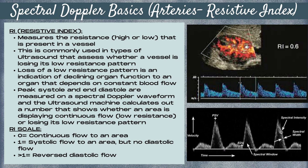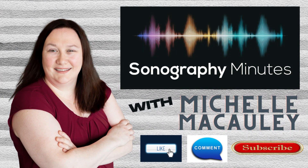On the RI scale, 0 indicates continuous flow to an area, which is a low resistance waveform. 1 indicates systolic flow but no diastolic flow, which is a high resistance flow pattern. Greater than 1 indicates a reverse diastolic flow. Interested in learning more about ultrasounds? Tune in on Wednesdays for new videos, and don't forget to like, comment, and subscribe!